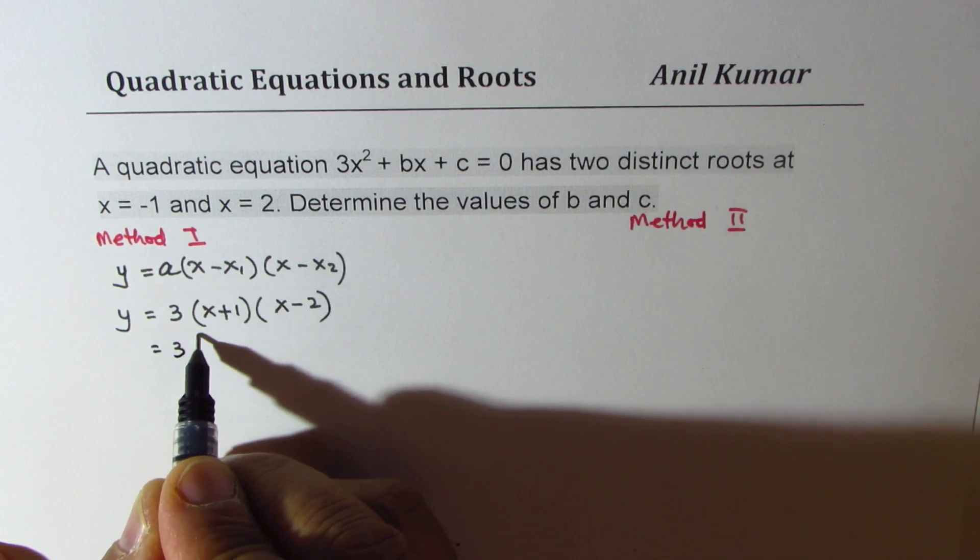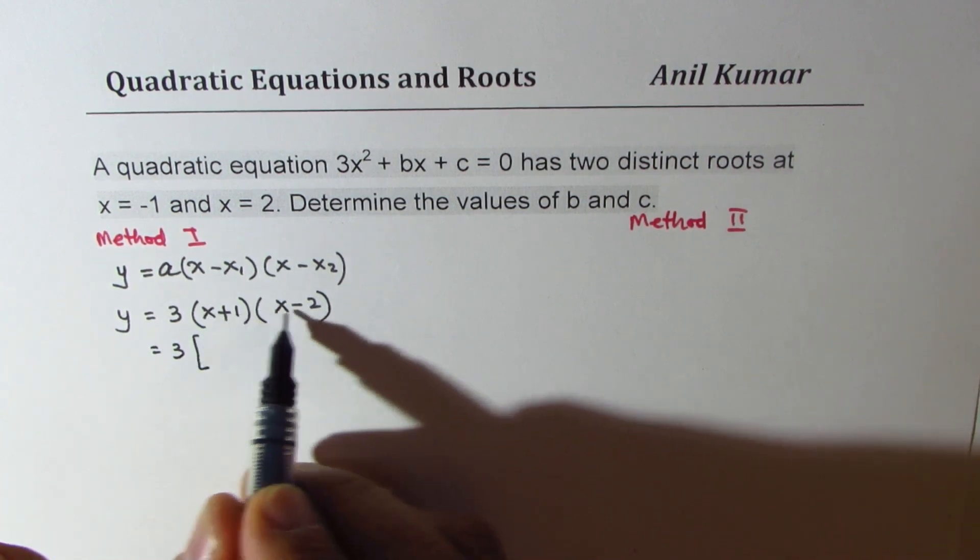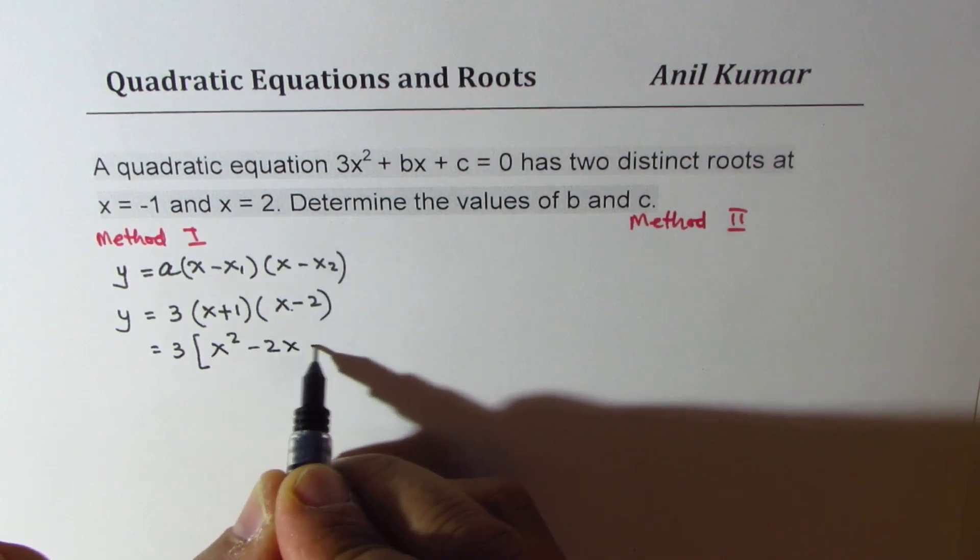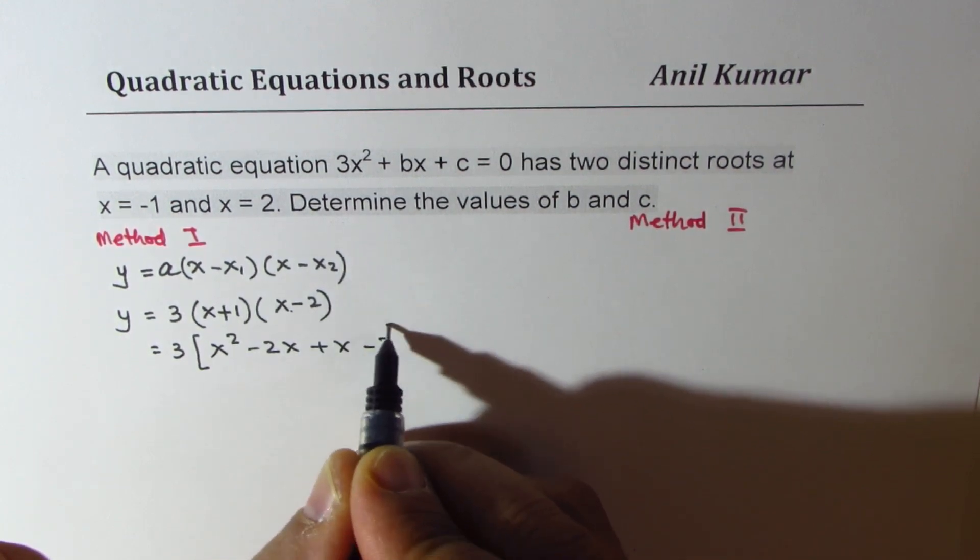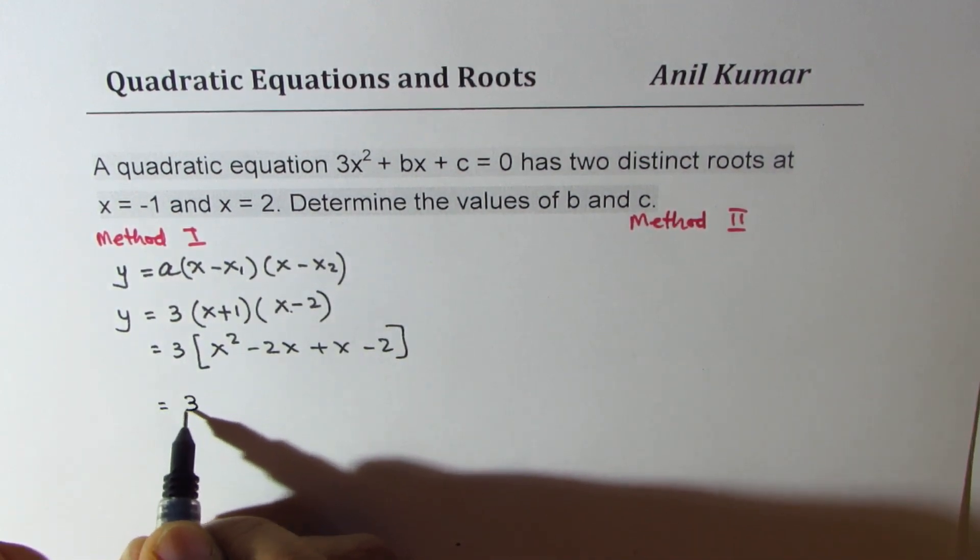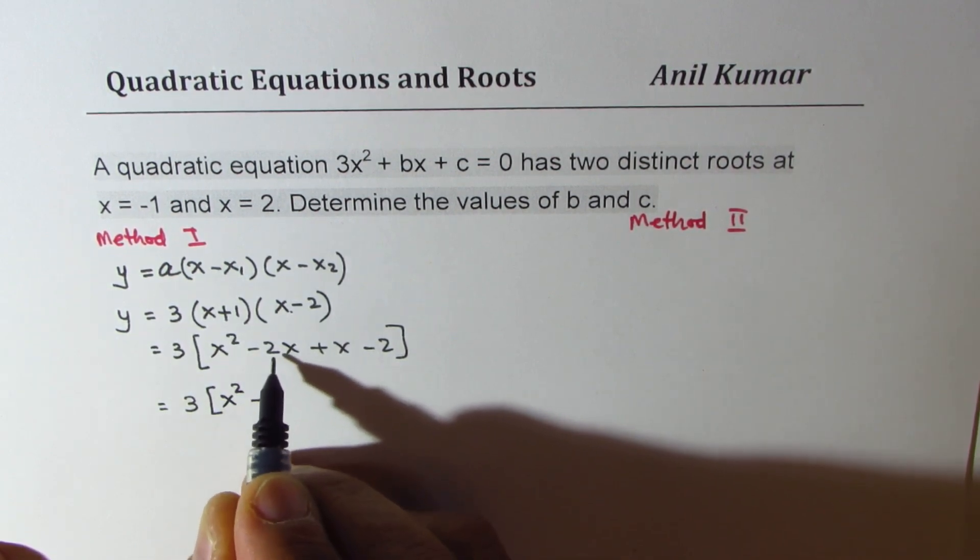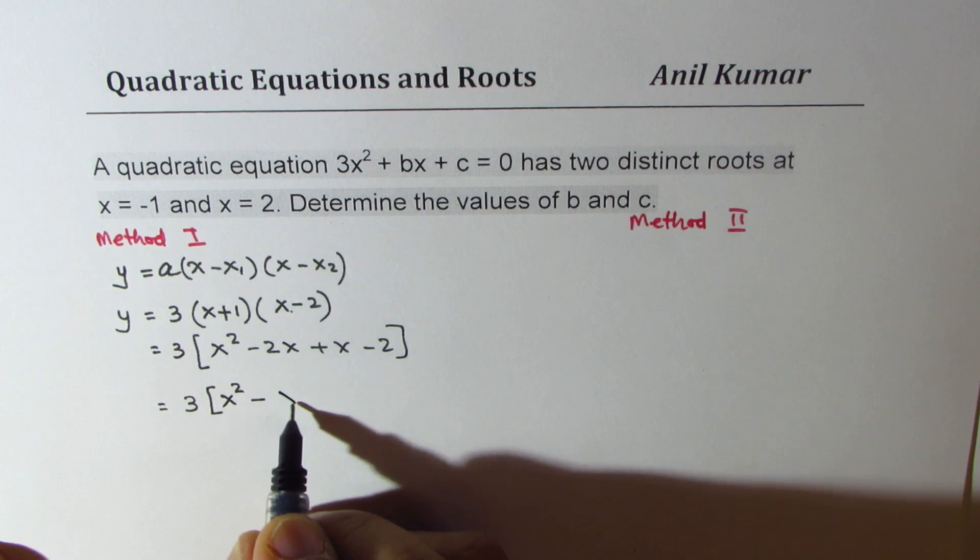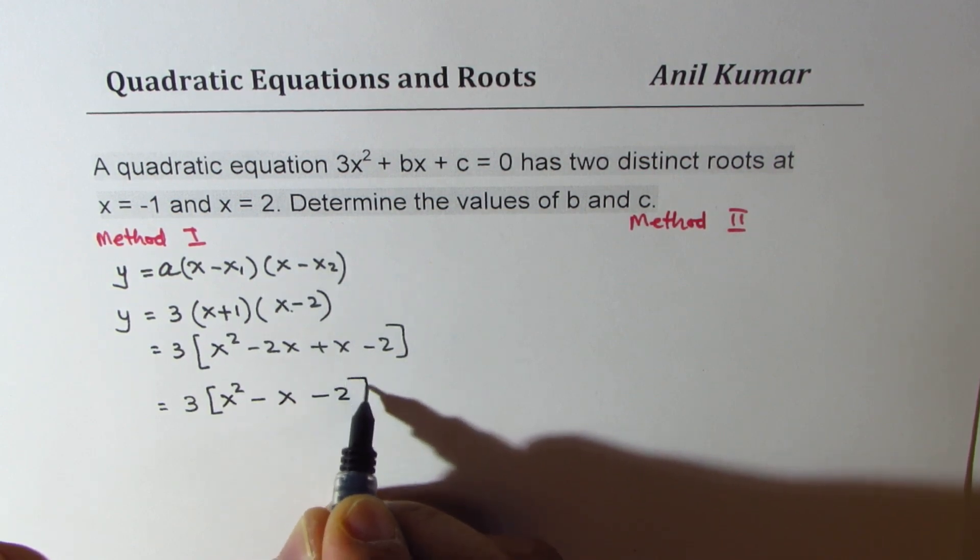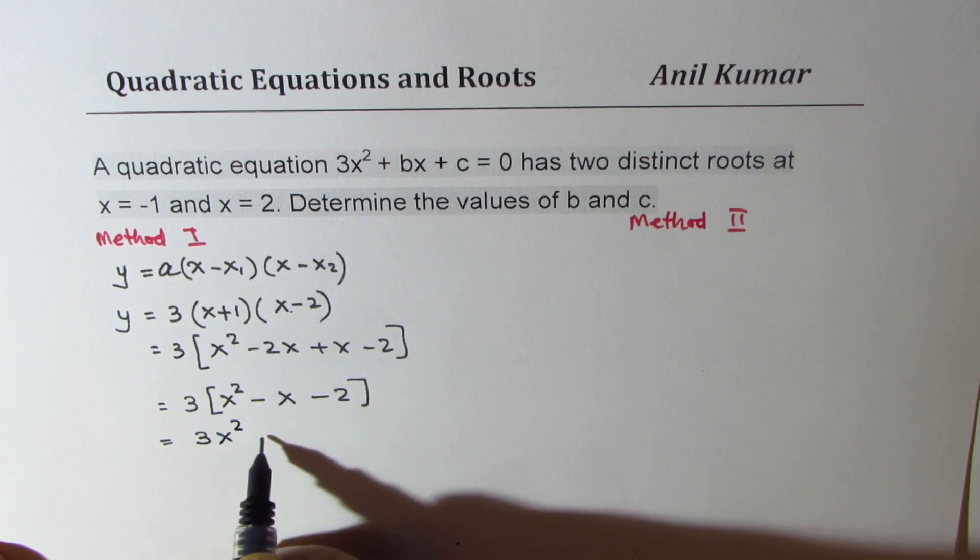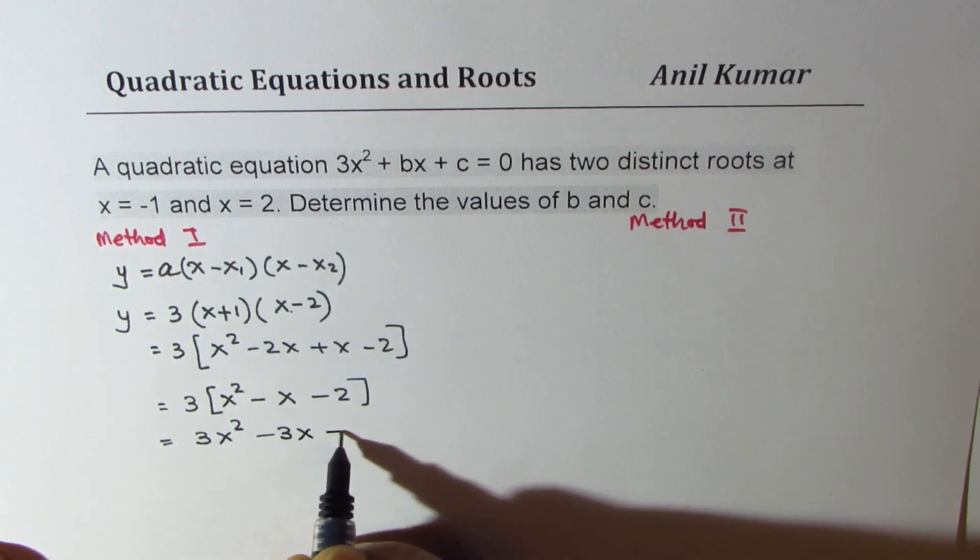Now, let's expand. So we have 3 here. Let me put a square bracket. So when you multiply, you get x squared minus 2x plus x minus 2. And that gives you 3 times x squared minus x minus 2. And when you open the bracket, you get 3x squared minus 3x minus 6.